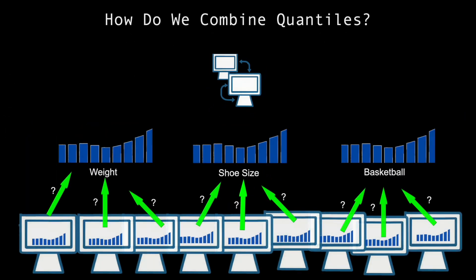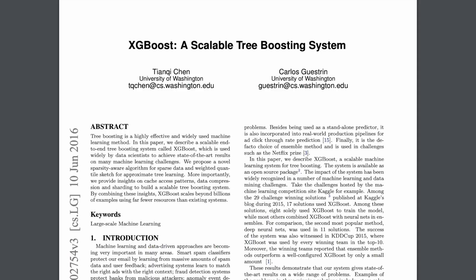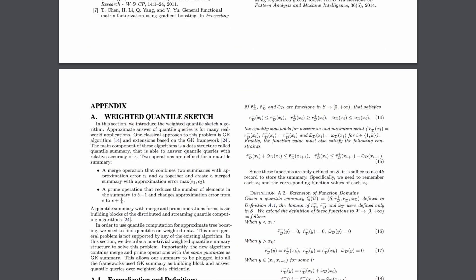But how do we combine this data and get it back to the source? The answer lies in the original XGBoost paper. Right at the bottom here, it outlines a two-page proof on how to merge two quantile summaries together, and how to reduce their memory size by pruning them. You decide to give it a read.